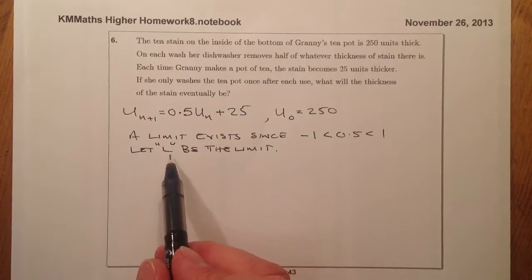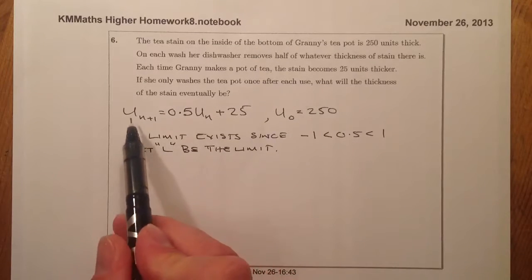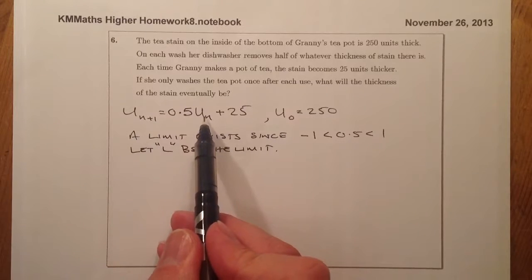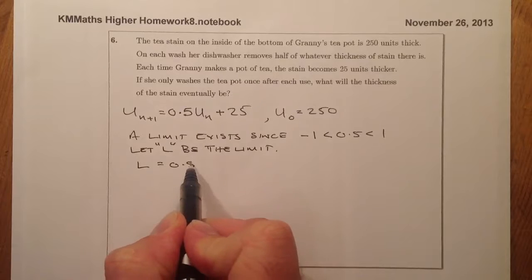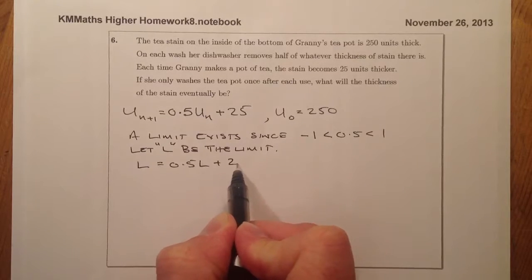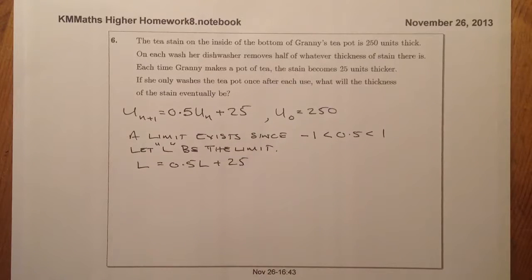Right, so when I work out a limit, what I'm going to do is replace the Un+1 and the Un with L. OK? Because these numbers are getting really so close together, so they're almost the same.